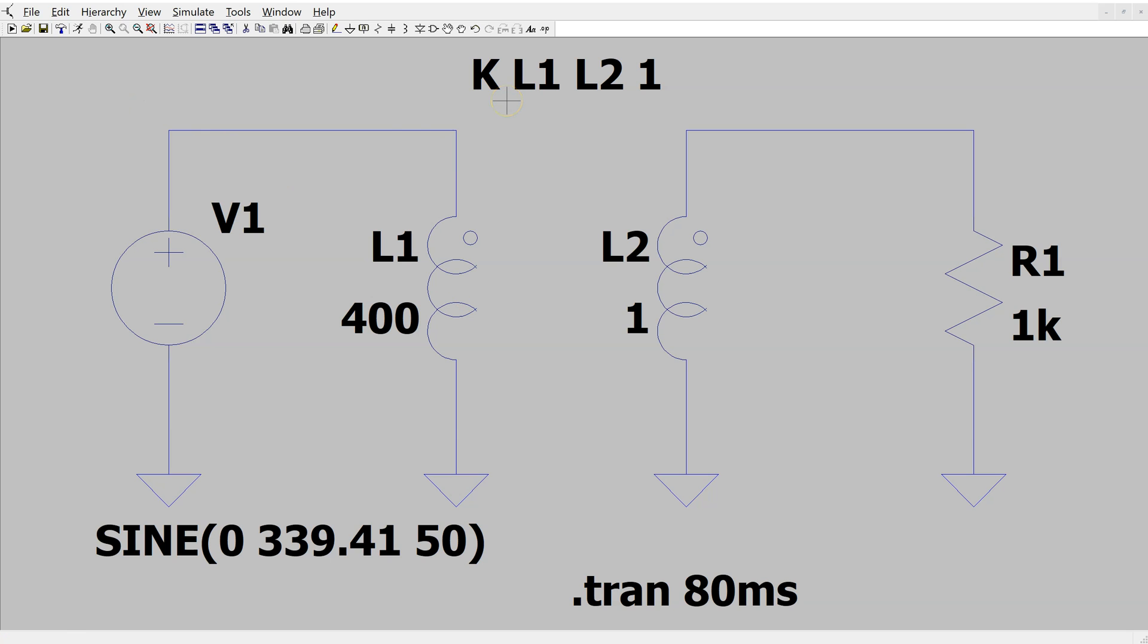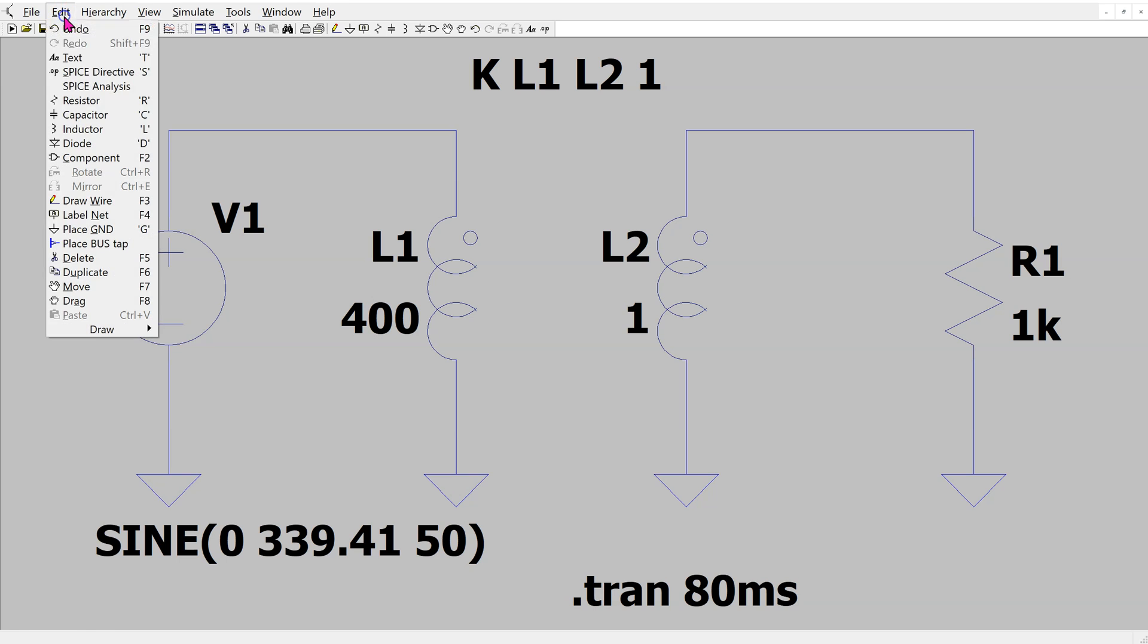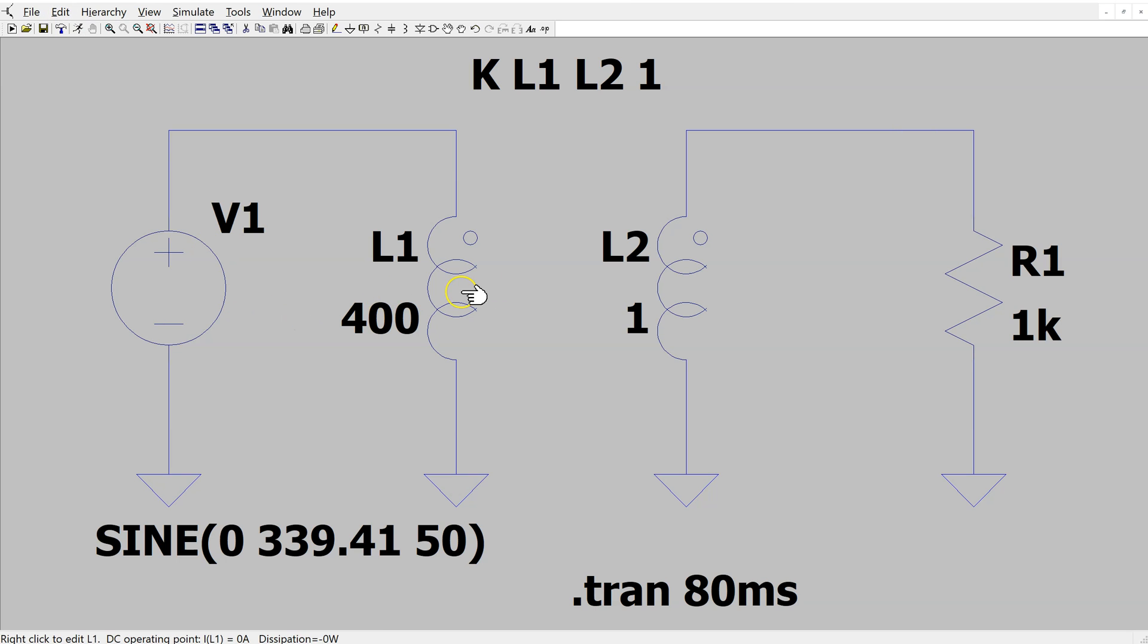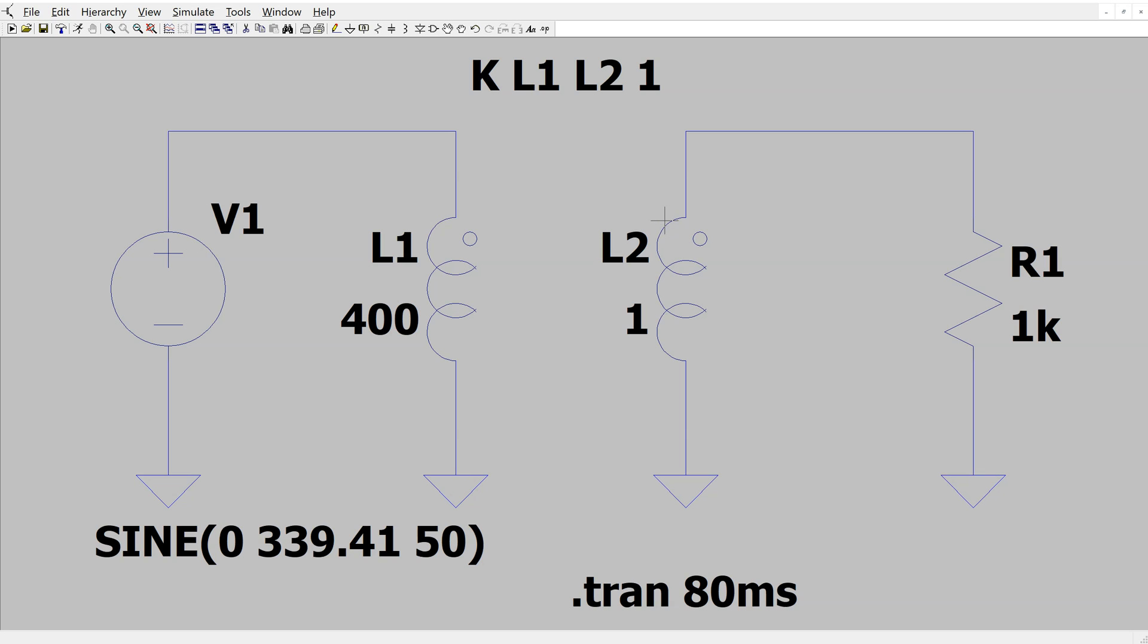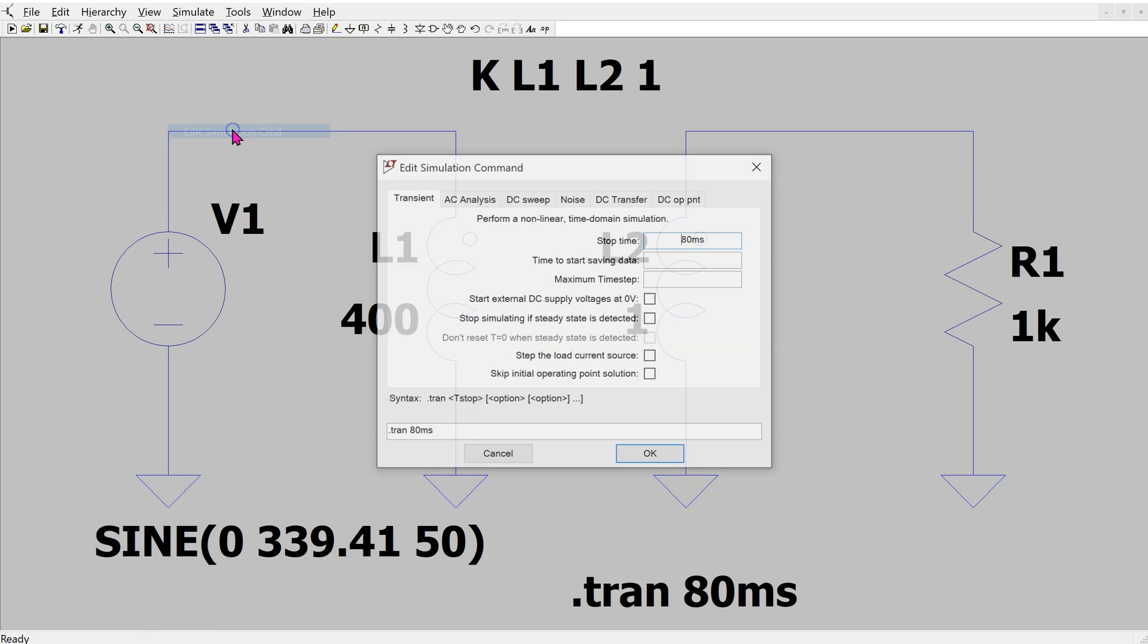The Spice directive can be accessed from the edit menu. In this simulation, we have set the series resistance to be a very small value. We are using the transient simulation, which can be accessed from the simulate menu.